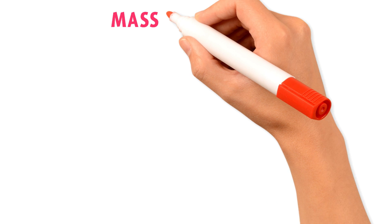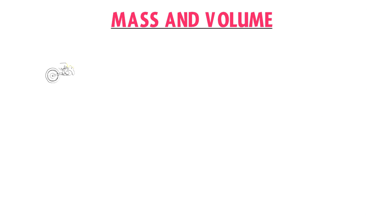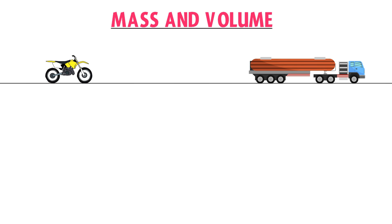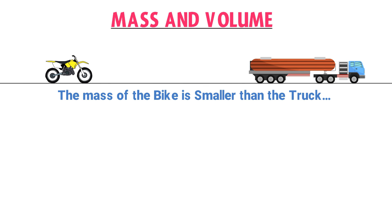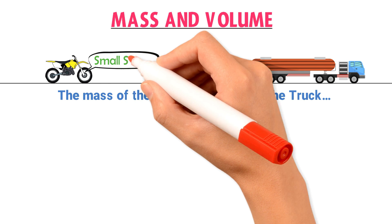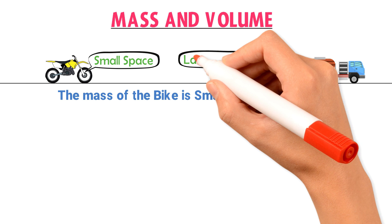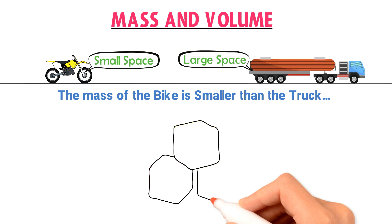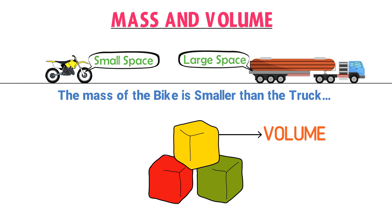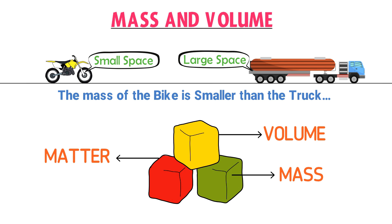Let me teach you the concept of mass and volume. Consider a bike and a heavy truck. We all know that both the bike and the truck have well-known values of masses. The mass of the bike is smaller than the mass of the truck. The bike occupies small space while the truck occupies large space. The bike occupies some space or volume and has some mass. Similarly, the truck also occupies some space or volume and has some mass. In physics, when an object occupies some space or volume and has some mass, it is known as matter.